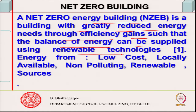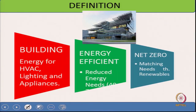Basically, the first thing is you have got to reduce the energy needs. If you have a system which can generate energy in the building itself, you can even supply back to the grid, which is also called a net negative building. The energy used from external sources should ideally come from locally non-polluting renewable sources. The major consumers of energy in a building are HVAC — heating, ventilation and air conditioning — lighting and appliances. An energy-efficient building can cut energy needs down by 40 percent, and net zero would get this energy from renewable sources like solar energy.